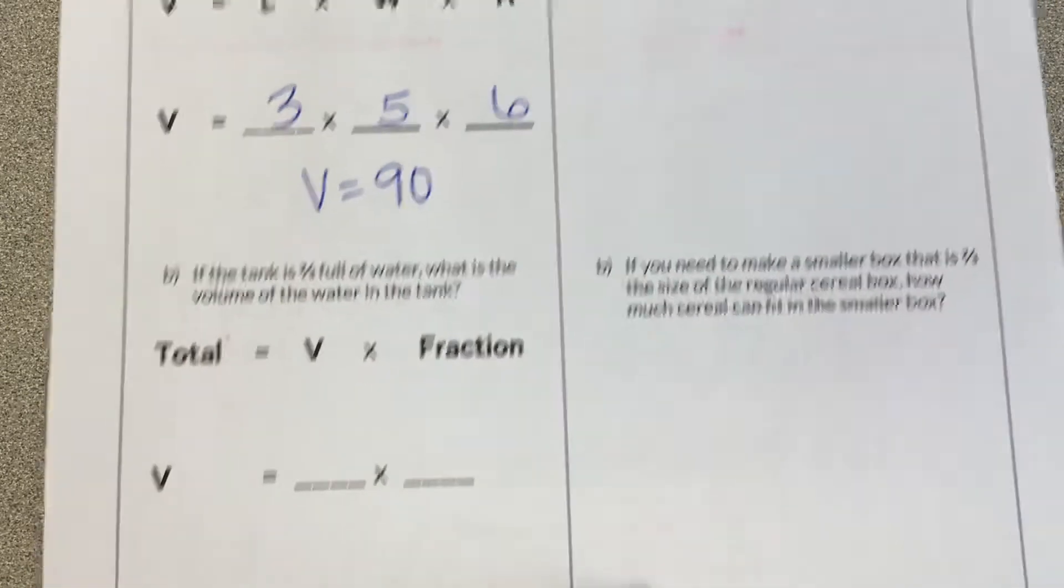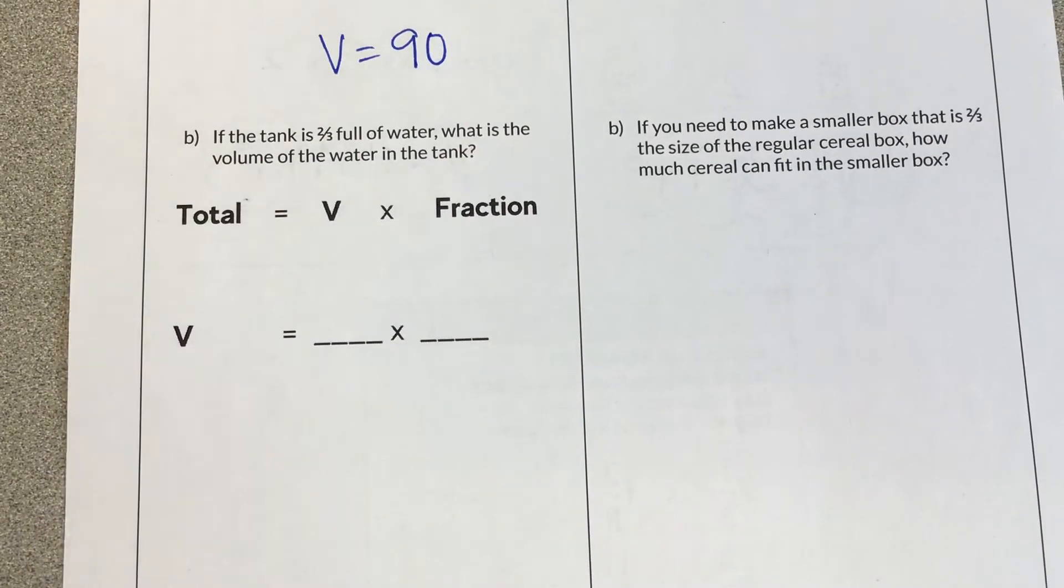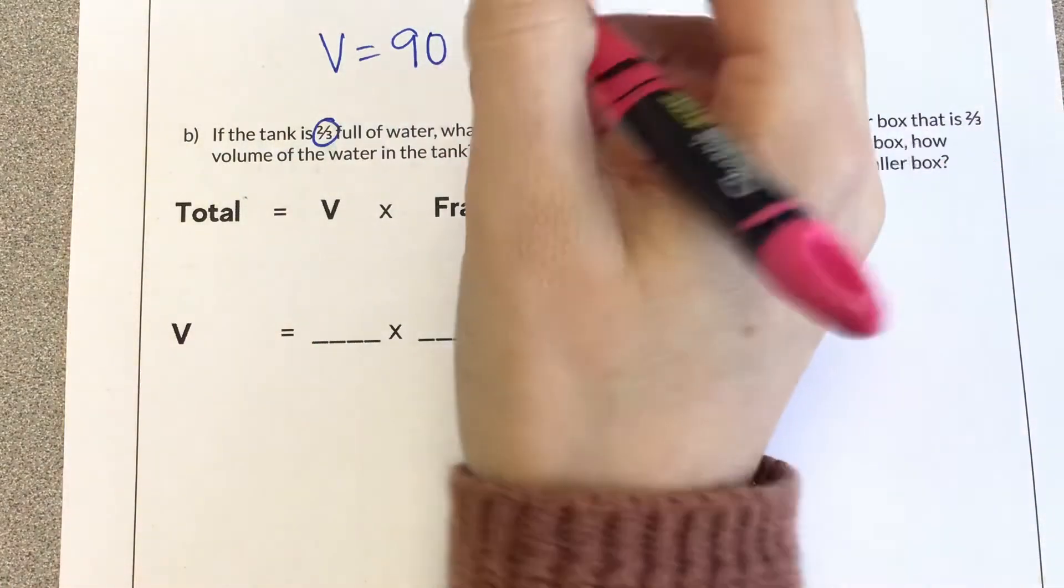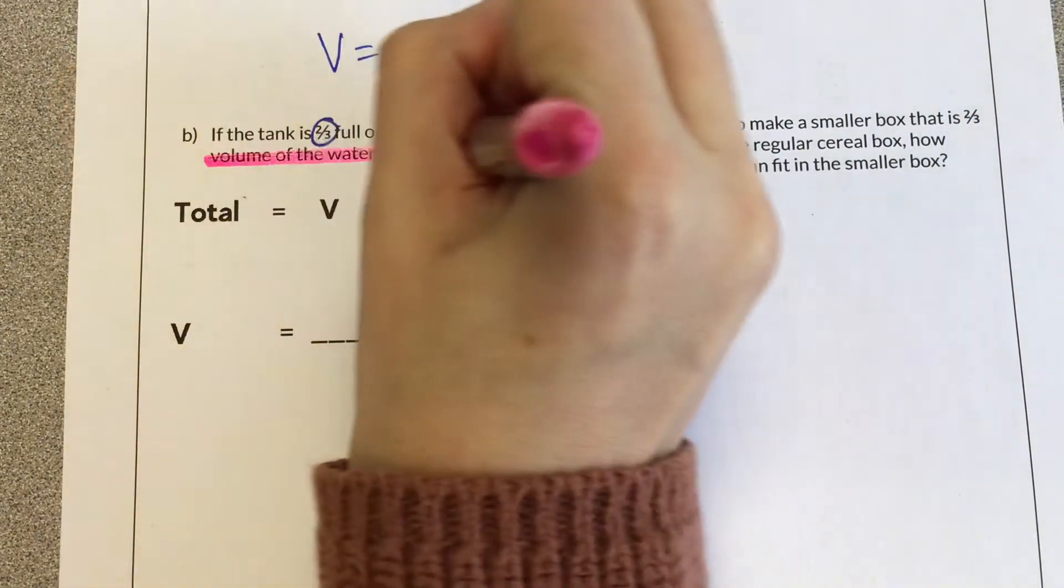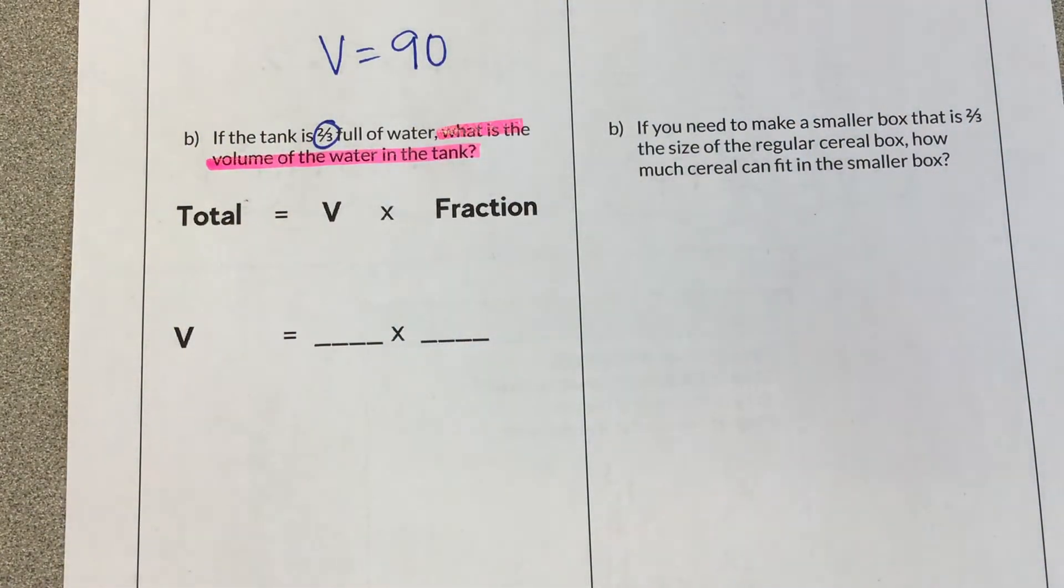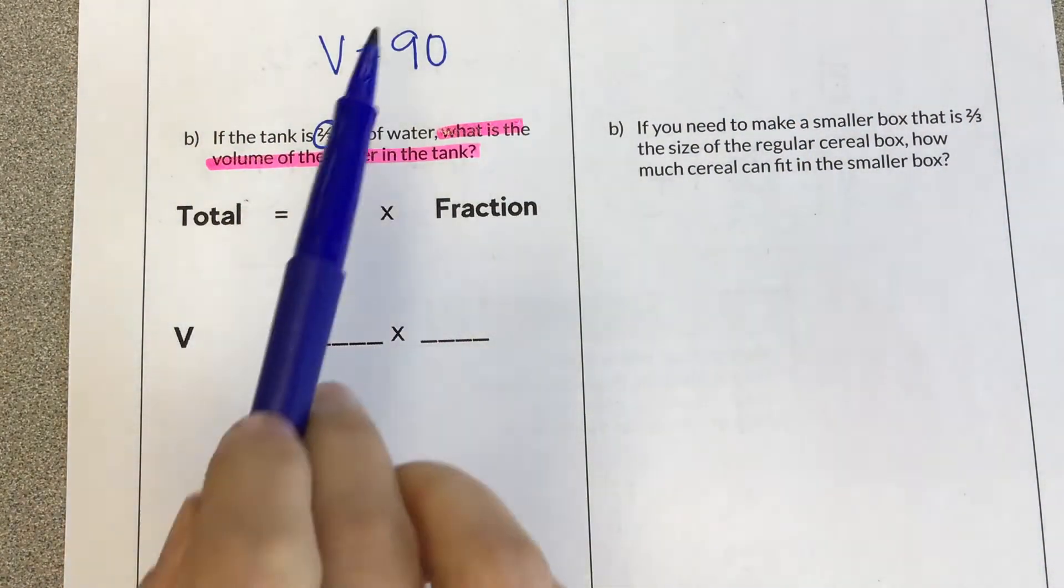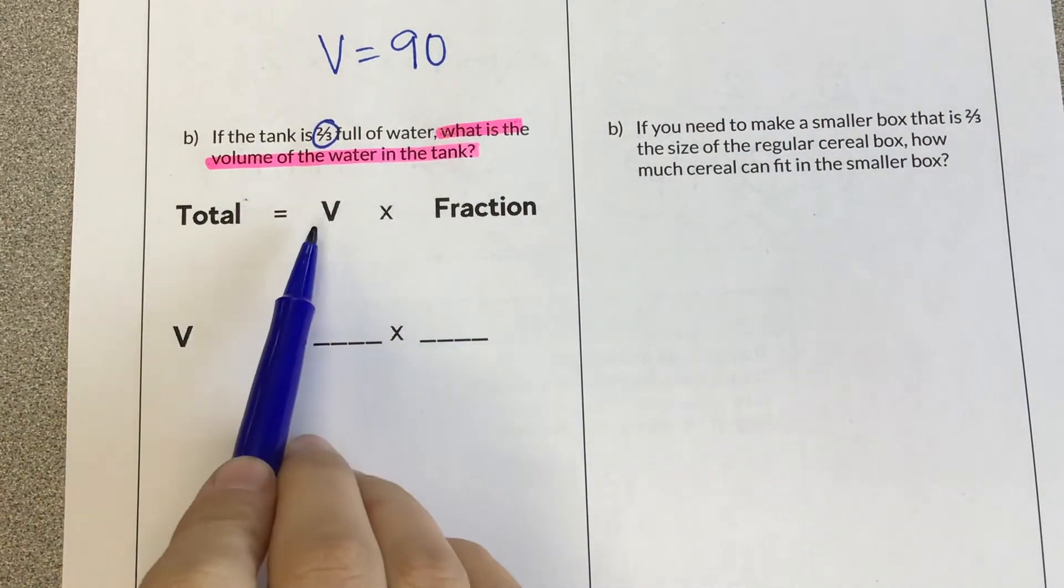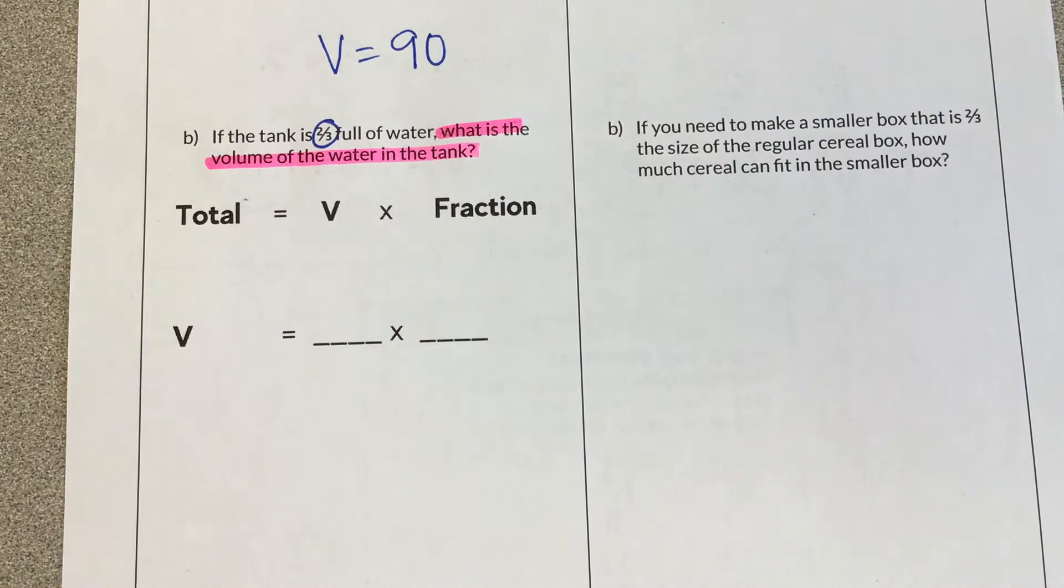Now we're going to use this in the second part of the question. It says, if the tank is 2 thirds full, what is the volume of the water in the tank? So now, 2 thirds full of water, so the whole 90 is not filled. Only 2 thirds of it is. So we're going to take our volume that we already know and multiply it by the fraction.